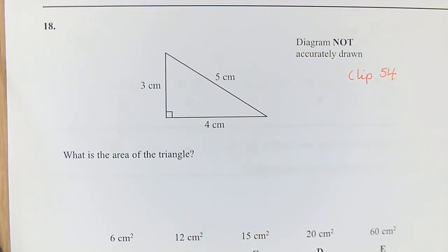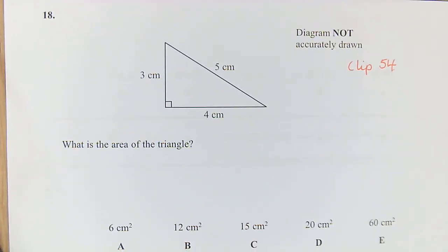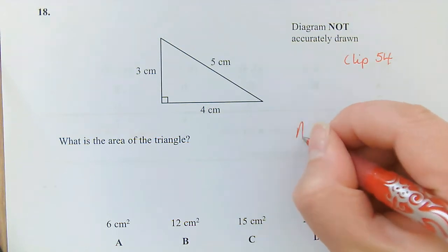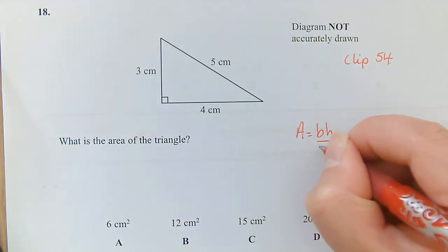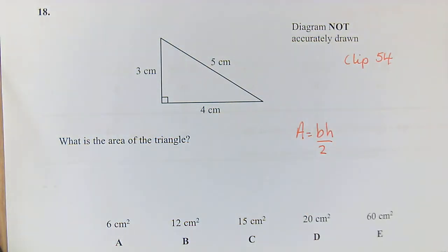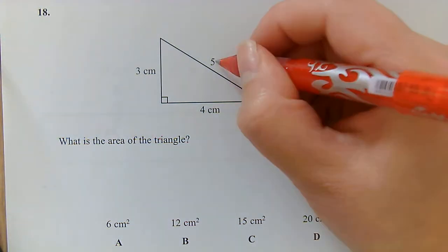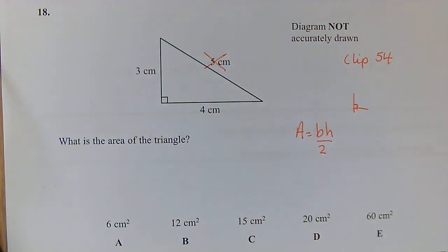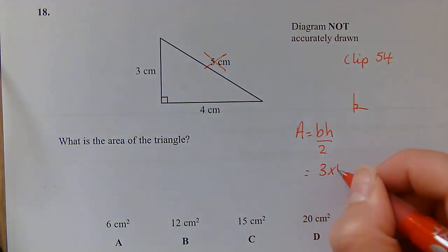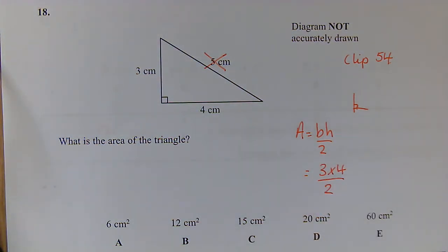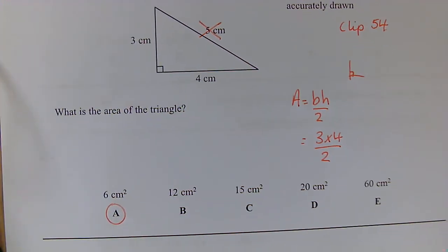Question 18: Area of the triangle. So remember, this is the formula that you will need to remember: base times height divided by 2. Remember that height has to be the perpendicular height. So we cannot have that slant height there. So we're doing our 3 multiplied by 4 divided by 2, 12 divided by 2 to give me 6 centimeters squared.